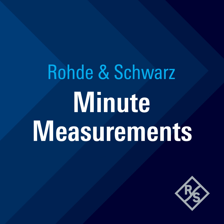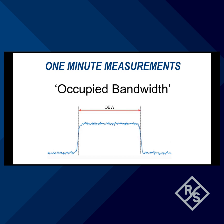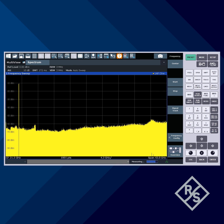In this edition of One Minute Measurements, we'll show how to use the OBW mode found on most Rohde & Schwarz Spectrum Analyzers to measure the occupied bandwidth of a digitally modulated signal. Occupied bandwidth is a measurement of the bandwidth that contains a specified percentage, typically 99%, of the total signal power. Here we'll measure the occupied bandwidth of a 100 MHz wide 5G NR signal centered at 3.5 GHz.